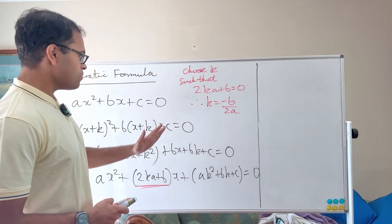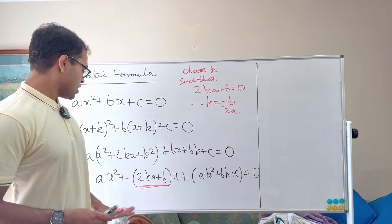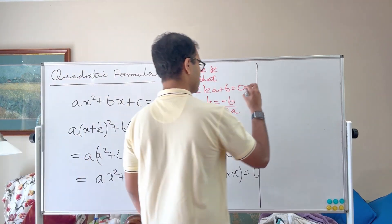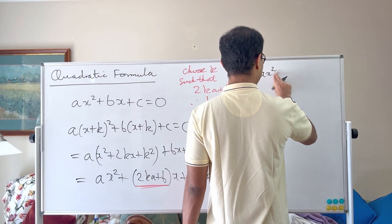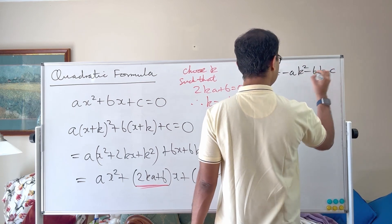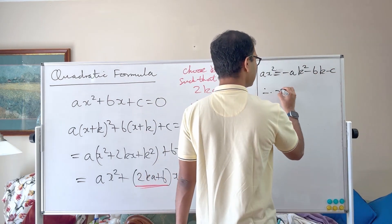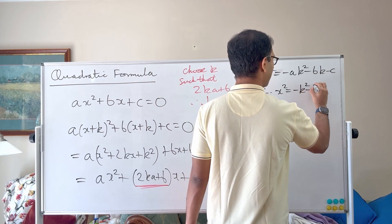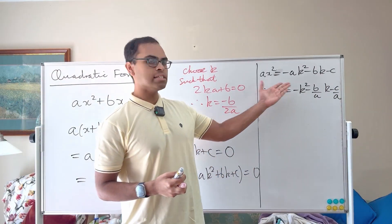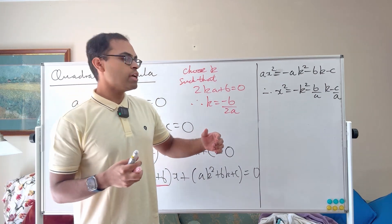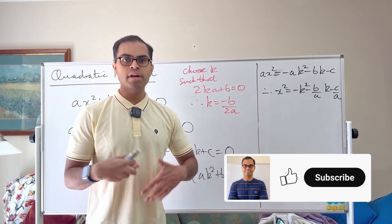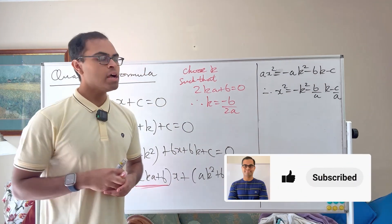Let's now solve for x. We've chosen k so the x coefficient is 0, so ax² + ak² + bk + c = 0. Moving terms to the other side: ax² = -(ak² + bk + c). Dividing both sides by a gives x² = -k² - (b/a)k - c/a. Now we can solve for x — it's just x equals plus or minus the square root of that expression. It could be negative, giving complex solutions, but we need to plug in k = -b/2a to get everything in terms of a, b, and c.